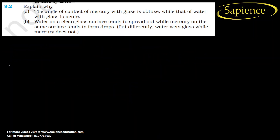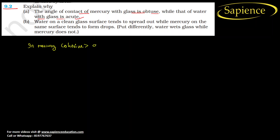Now question 9.2: the angle of contact of mercury with glass is obtuse while that of water with glass is acute — why? In mercury, the cohesive force is greater than the adhesive force, while in water, the cohesive force is less than the adhesive force.